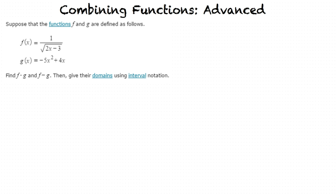Suppose that the functions f and g are defined as follows. f of x equals 1 over the square root of 2x minus 3, and g of x equals negative 5x squared plus 4x. We want to find f times g and f minus g, then give their domains using interval notation.